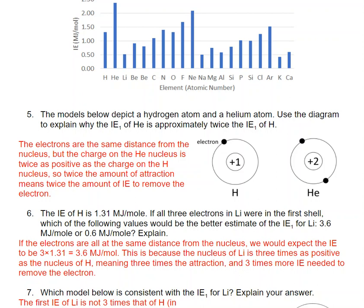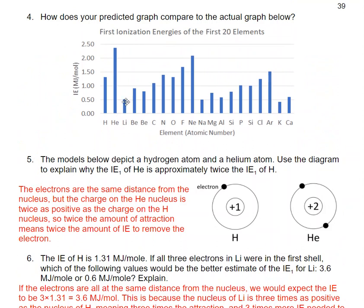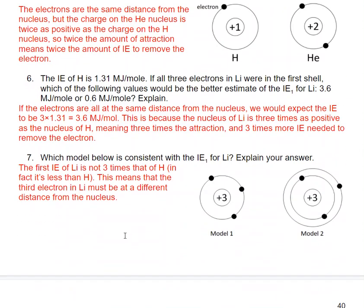The ionization energy for hydrogen is 1.31 megajoules per mole. If all three electrons on lithium were in the first shell as shown in Model 1, we would expect the attraction to be three times that of hydrogen because the charge is three times as positive. But the first ionization energy of lithium is not three times that of hydrogen — in fact, looking at the graph, it's way less than hydrogen's. The best explanation is that some of those electrons are not at the same distance from the nucleus.